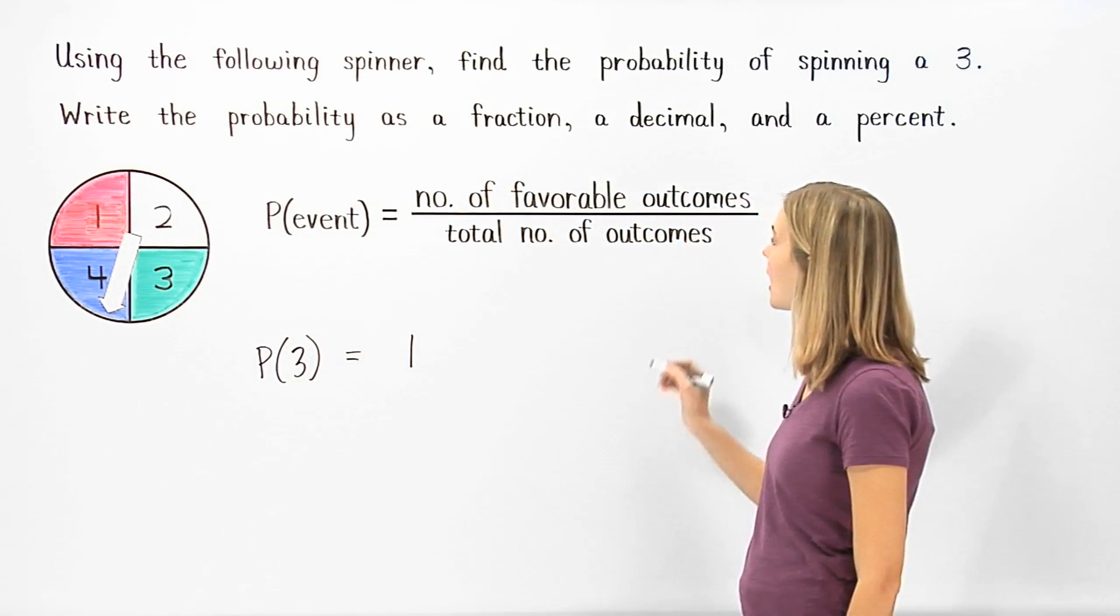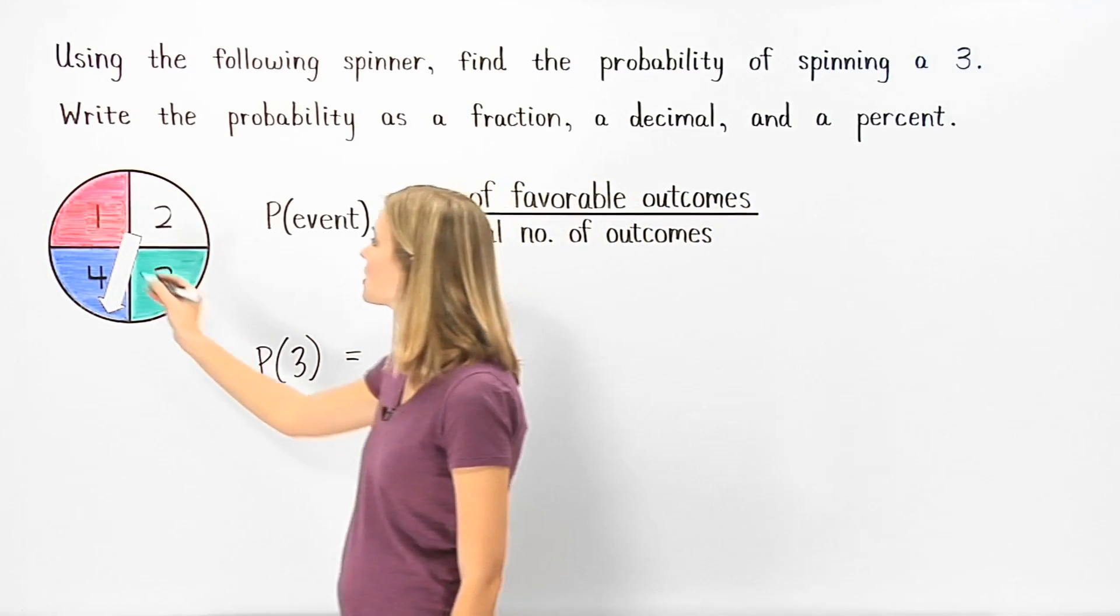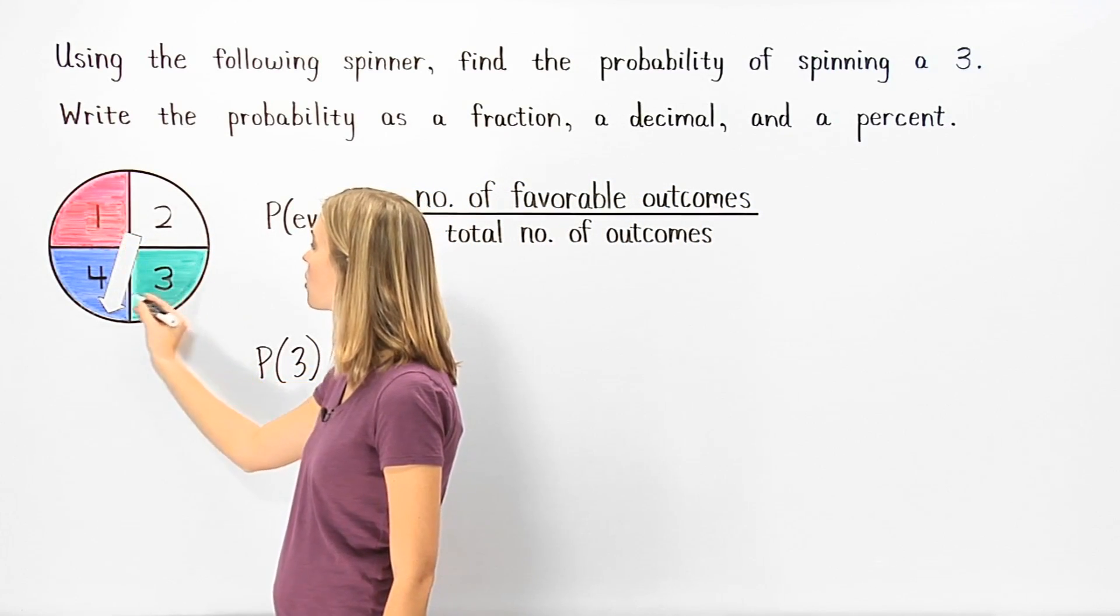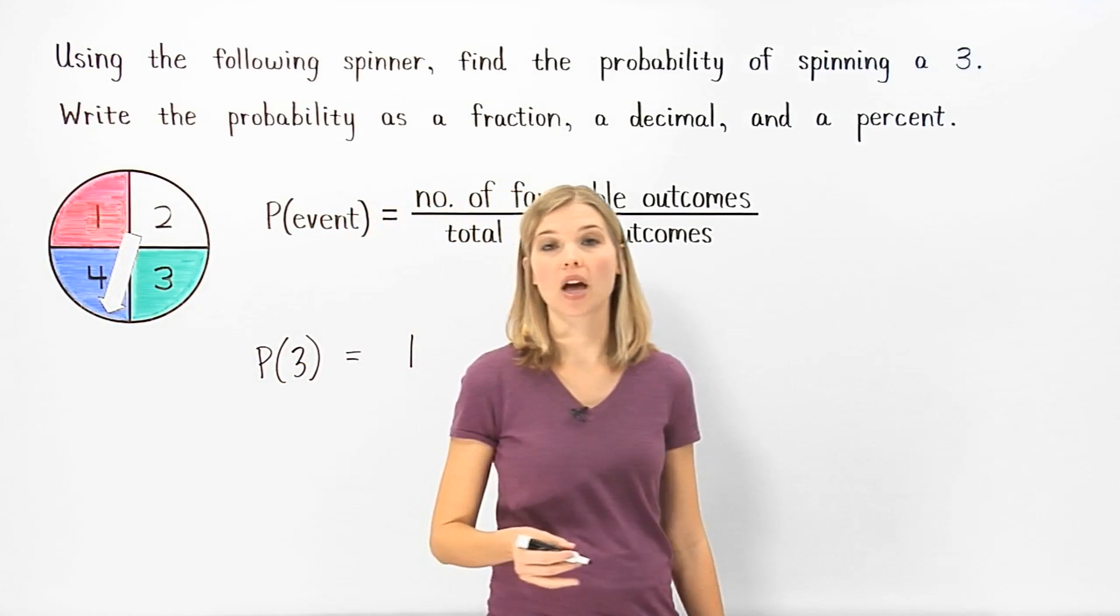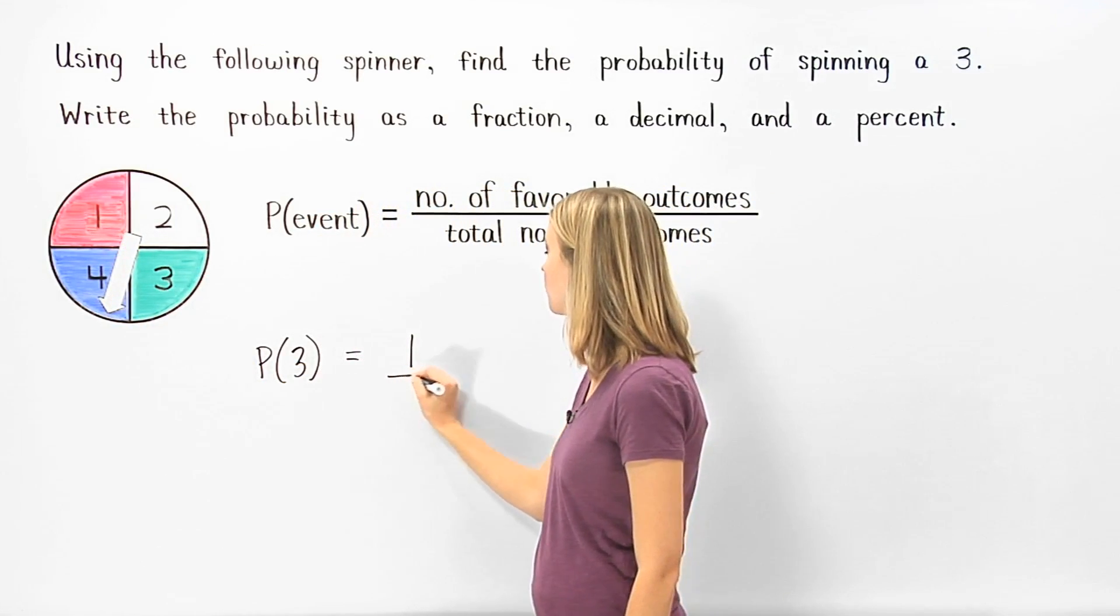Next we find the total number of outcomes. Since there are four possible outcomes, 1, 2, 3, or 4, and each outcome is equally likely, the total number of outcomes is 4.